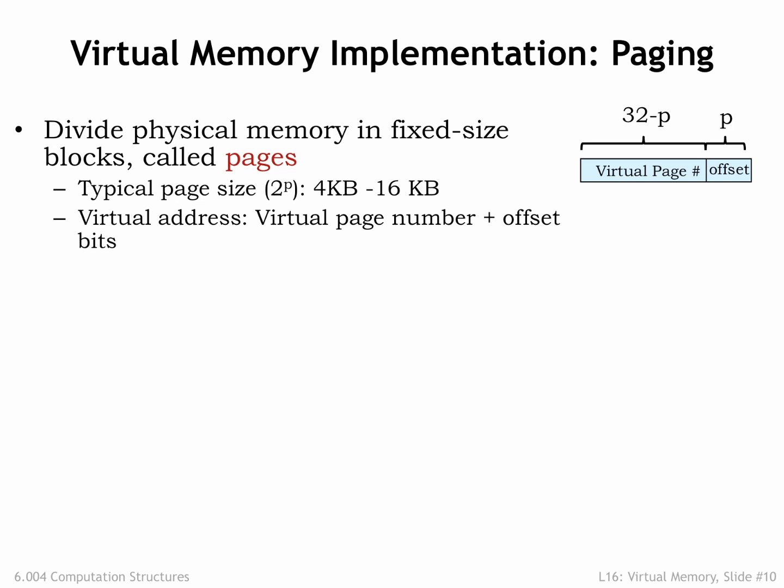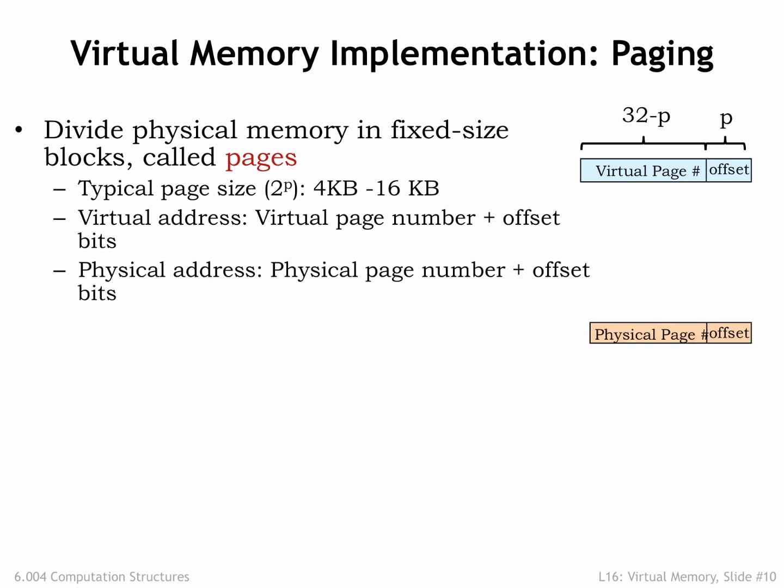Suppose p equals 12. If the CPU produces a 32-bit virtual address, the low-order 12 bits of the virtual address are the page offset and the high-order 20 bits are the virtual page number. Similarly, the low-order p bits of the physical address are the page offset and the remaining physical address bits are the physical page number. The key idea is that the MMU will manage pages, not individual locations.